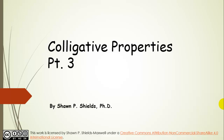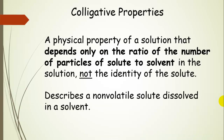Colligative properties. We're going to start talking about the properties that are affected when a non-volatile solute is dissolved in a solvent. A non-volatile solute means something that doesn't have a high vapor pressure, and it's dissolved in some solvent. If you look at individual physical properties of that solution, that property is only going to depend on the ratio of the number of particles of solute to solvent in the solution, but not the identity of the solute.